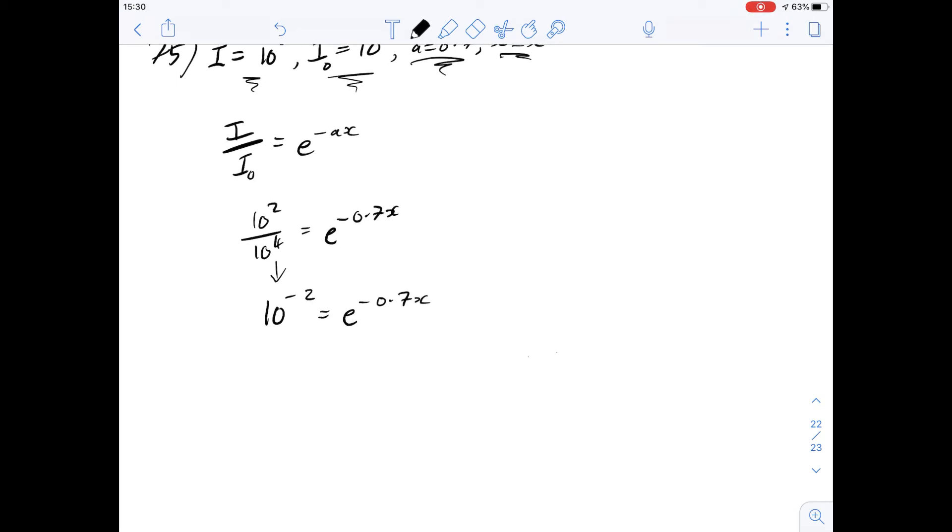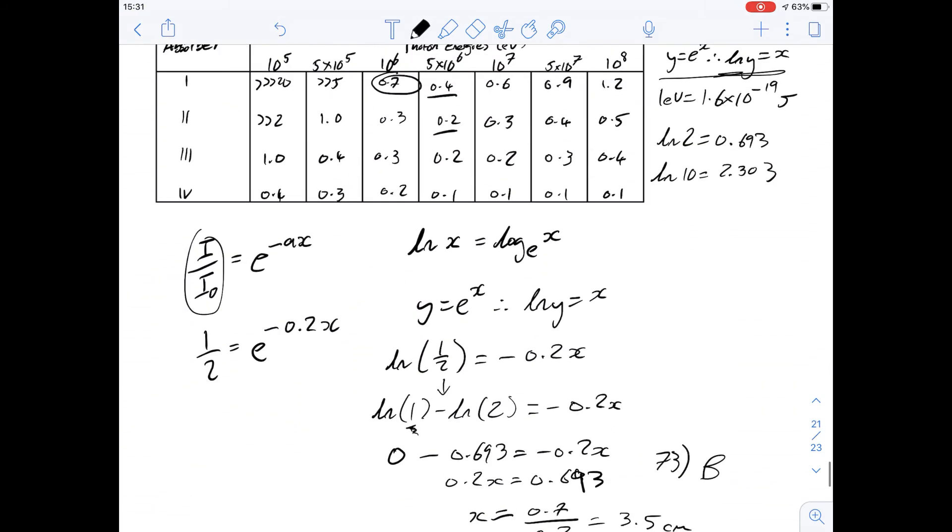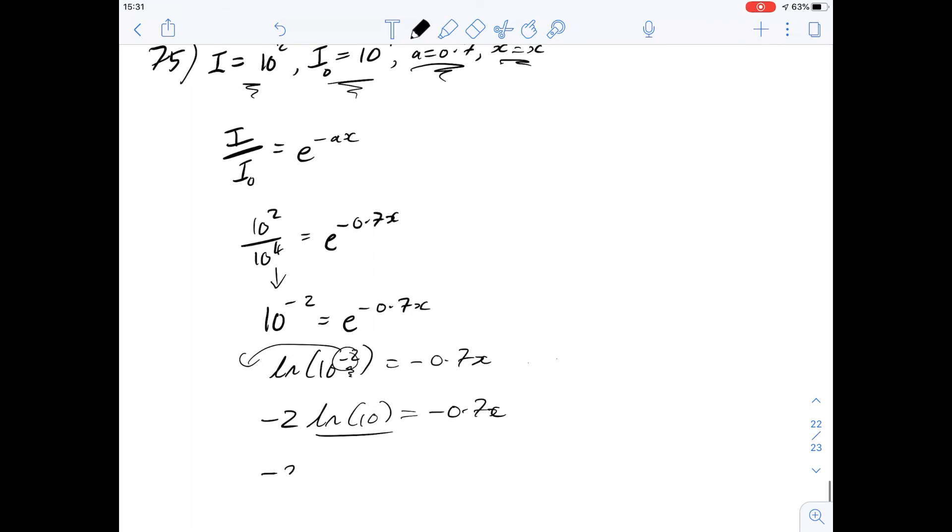And again this is just our logs again. So ln of 10 to the minus 2 is going to be minus 0.7x. And whenever you have something raised to something else in a log you can take this negative 2 and just put it at the start. So instead of dealing with dodgy numbers you can have minus 2 times the log of 10 equals minus 0.7x. This is a value we're given in the question and we're going to scroll up and see what it is. 2.303. So minus 2 times 2.303 equals minus 0.7x.